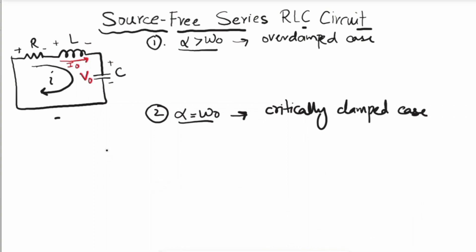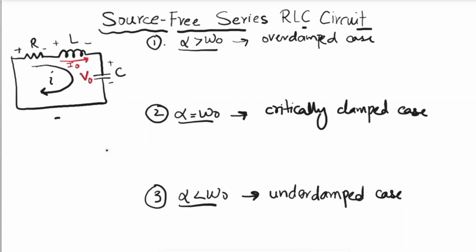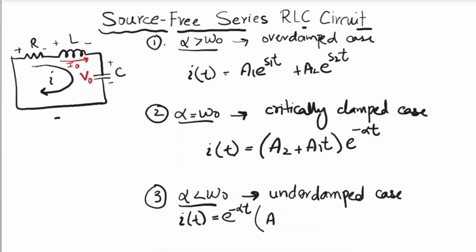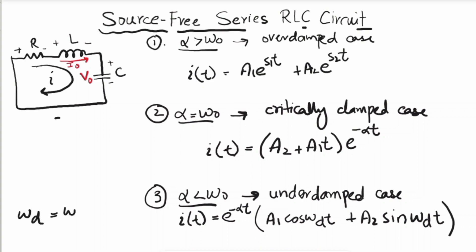From the values of s1 and s2, there are three types of solutions depending on the relationship between α and ω₀. First, when α > ω₀, the response is over-damped: i(t) = A₁·e^(s1·t) + A₂·e^(s2·t). Second, when α = ω₀, it is critically damped: i(t) = A₂·e^(-αt). Third, when α < ω₀, the response is under-damped: i(t) = e^(-αt)[A₁·cos(ωd·t) + A₂·sin(ωd·t)], where ωd = √(ω₀² - α²).